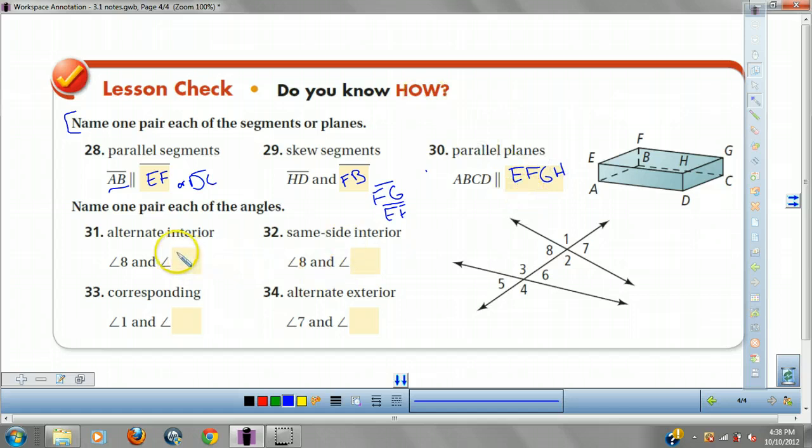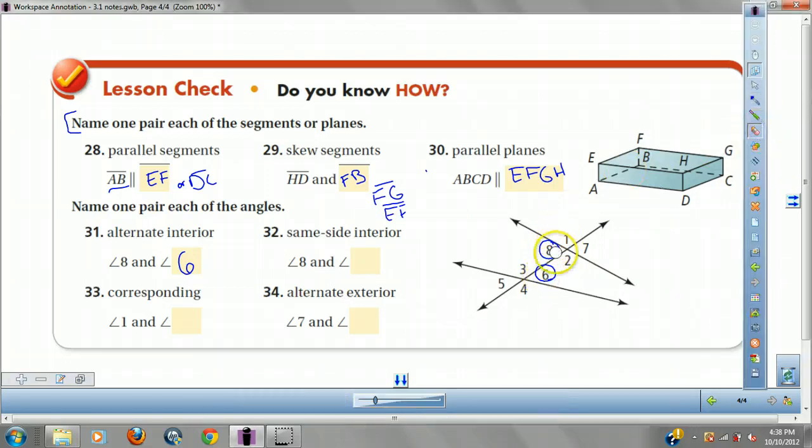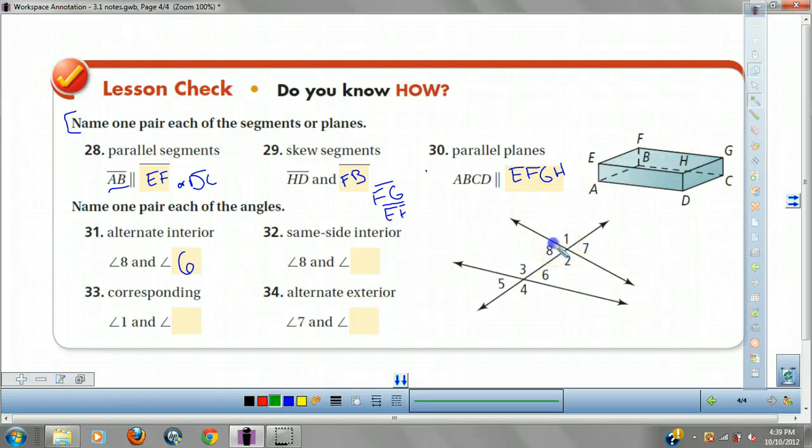Now for pairs of each angles, alternate interior. So we look at 8. Alternate means we have to jump over. And we have to stay inside. So 6 is alternate interior, so you jump over to 6. What about same side interior? So we look at 8. We are not jumping over. We are going right next to it. And we got 3.